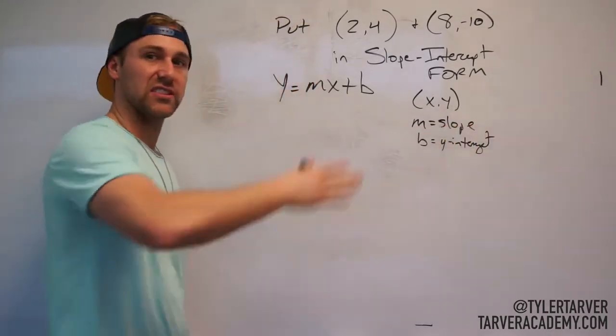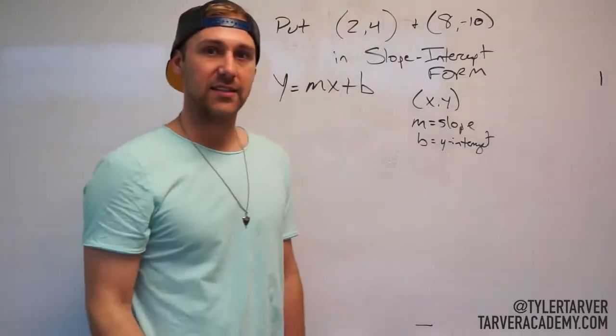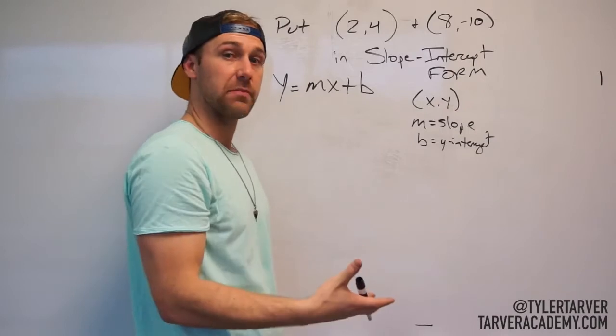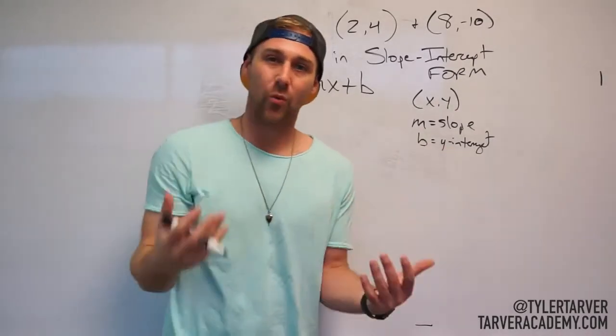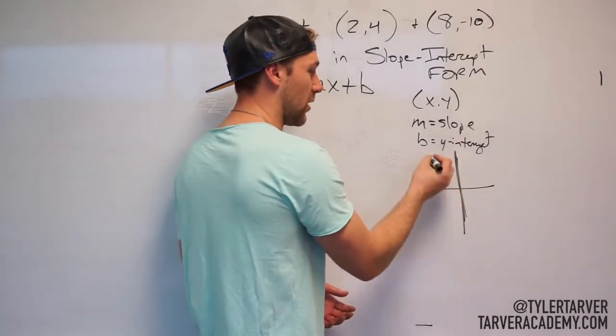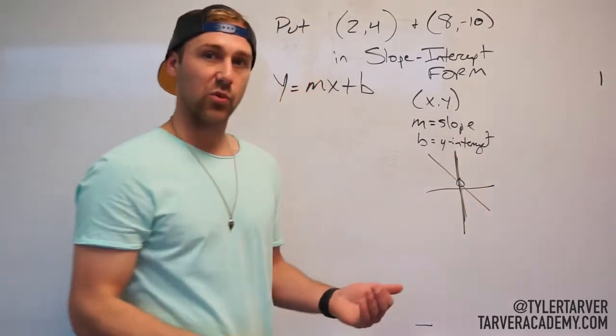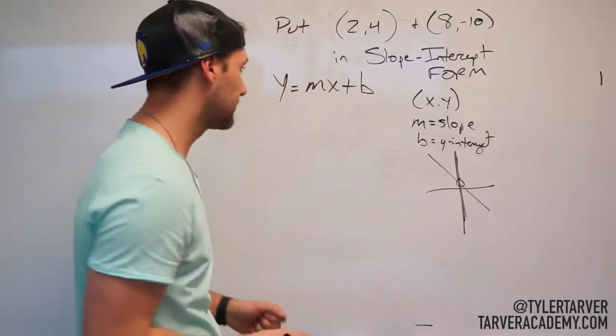Slope is just like how steep the line is, it's your rate of change, it's how steep that line is that we're working with. The equation of this line is how steep it is. And then your y-intercept, that's where it crosses the y-axis. Like again, when I showed this earlier, this is your y-axis. So wherever that line crosses, that's your y-intercept, okay? It's just telling you the number that that is on the y-axis.